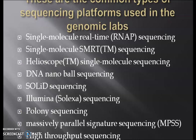Besides all the sequencing methods discussed, there are also other sequencing platforms used in genomic labs, such as SMRT (single molecule real-time sequencing), RNA-seq, SMRT-P, Helicos, DNA nanopore sequencing, SOLiD sequencing, Illumina sequencing, colony sequencing, and hyper-operative sequencing.